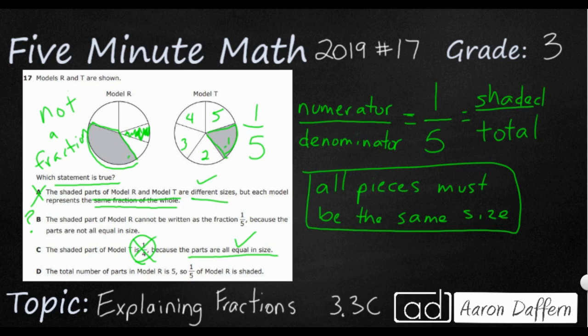And then D. The total number of parts in model R is five, so one-fifth of model R is shaded. This is correct, but it is not one-fifth because, once again, it's not a fraction. They are not equal in size. So the answer is B.